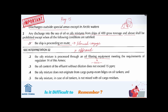The third criterion: the oil content of the effluent — the effluent being the outlet of the oily water separator after treatment — without dilution does not exceed 15 ppm (parts per million). Dilution means you cannot add water after processing just to reduce the oil content and bypass the sensor. That is not allowed.